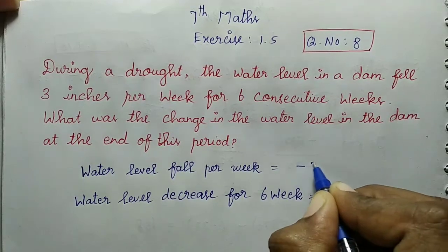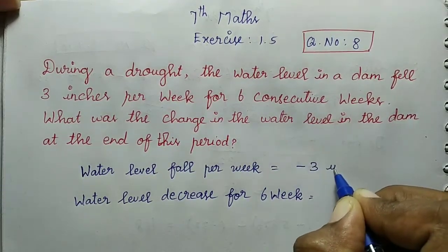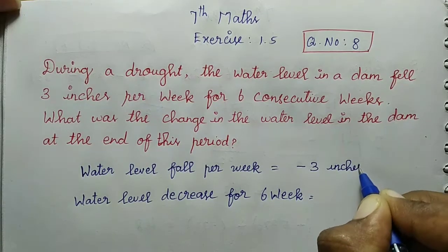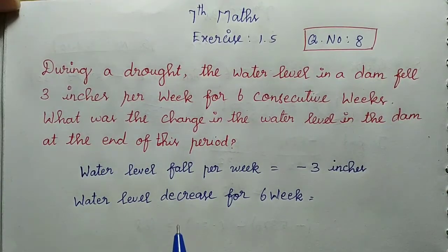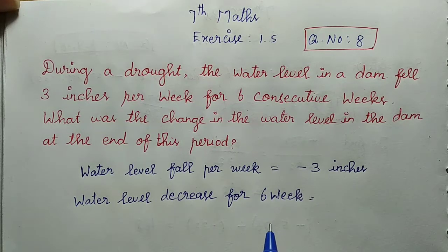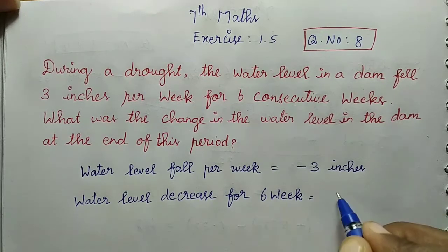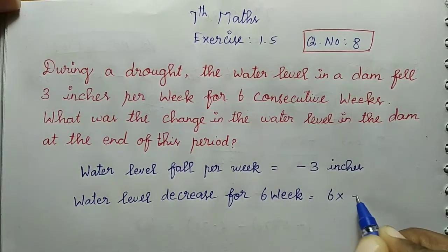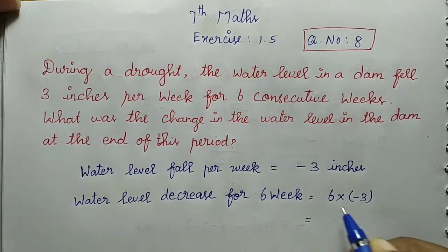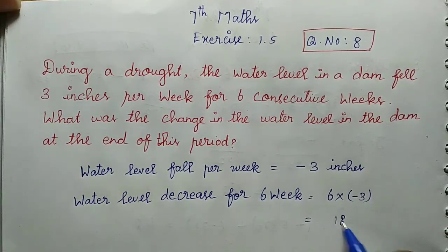The water level is decreasing, so we represent it as a negative number: minus 3 inches. We need to find the change in water level for 6 consecutive weeks. So the process is 6 multiplied by minus 3. We multiply this value: 6 threes are 18.